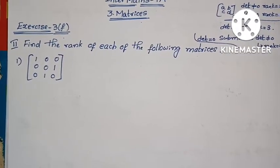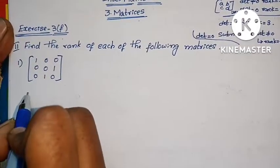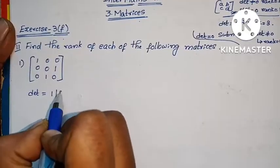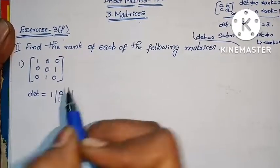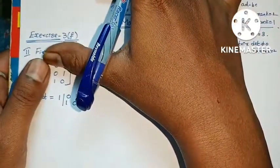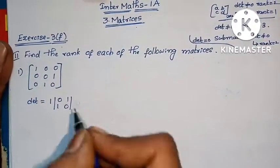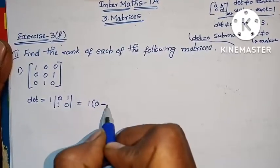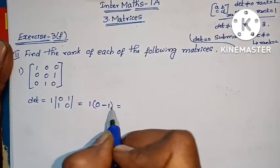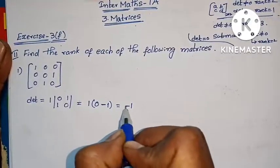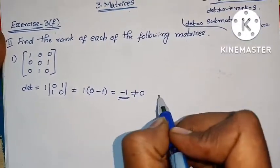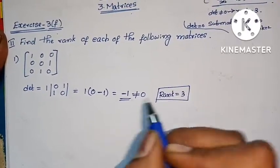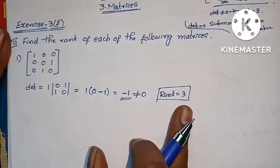Now, let's do the first problem. We compute minus 1 into 1, then 1 into 1, 1 minus 1. The determinant is not equal to 0, so rank equals 3.